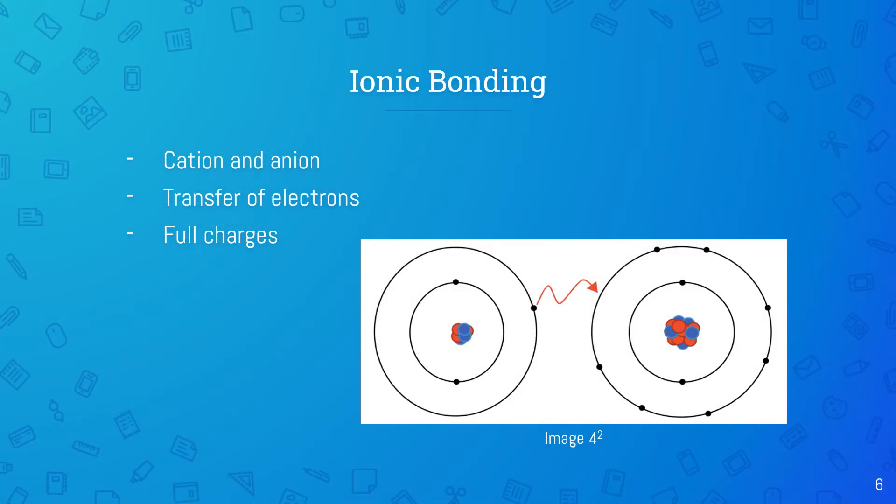Ionic bonding occurs between a cation, which can be a metal or polyatomic cation, and an anion, which can be a nonmetal or polyatomic anion. In ionic bonds, electrons get completely transferred from the cation to the anion, resulting in full charges on the atoms, which you can see in this image.